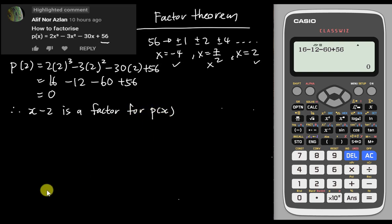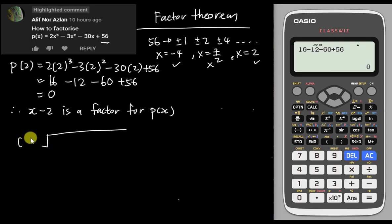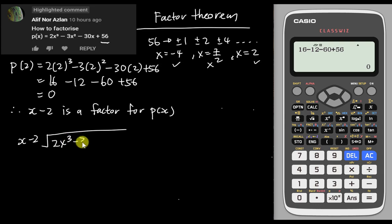I would suggest doing a long division because it seems easier. Since x minus 2 is the factor, we divide 2x³ minus 3x² minus 30x plus 56 by x minus 2.